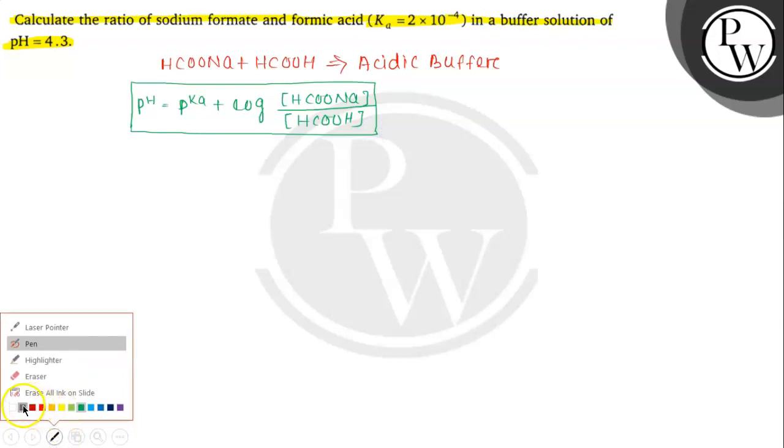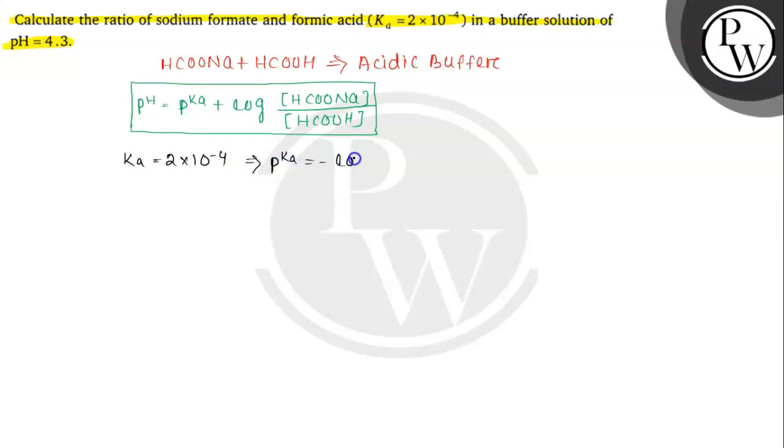Ka value is given, that is 2 into 10 to the power minus 4. So from this we can calculate the value of pKa, which equals to minus log of Ka, that is minus log of 2 into 10 to the power minus 4. So it becomes minus log of 10 to the power minus 4, which equals to 4 minus log 2. And we know the value of log 2 is 0.3010, which equals to 3.698.